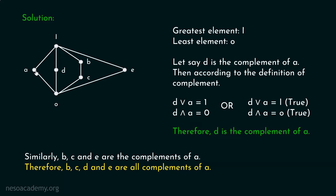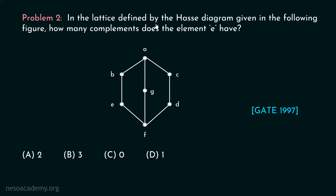So there are a total of four complements of A: B, C, D, and E. Now let's consider problem two. In the lattice defined by the Hasse diagram given in the following figure, how many complements does the element E have? This question has been asked in GATE 1997. I would encourage you to pause the video and try to find the solution. Let's move on to the solution.